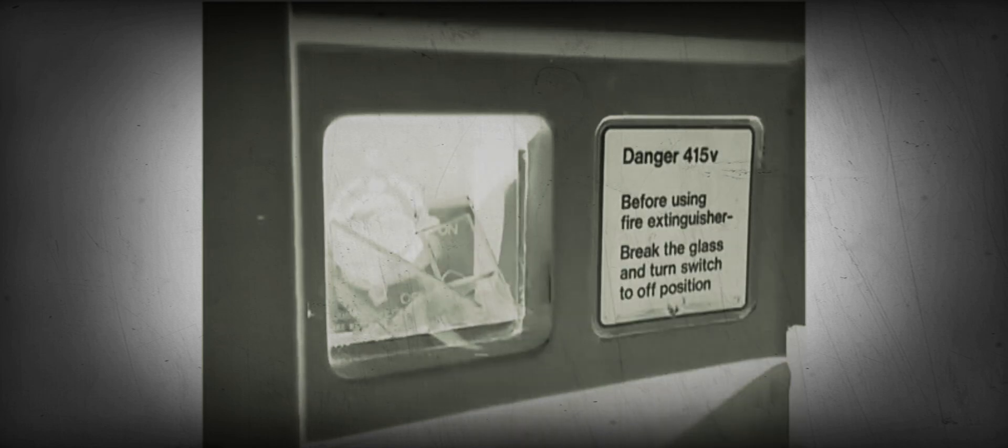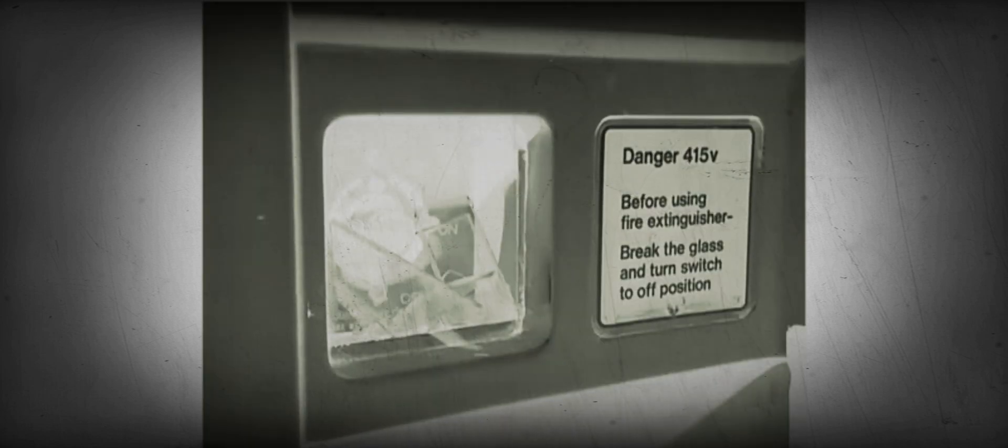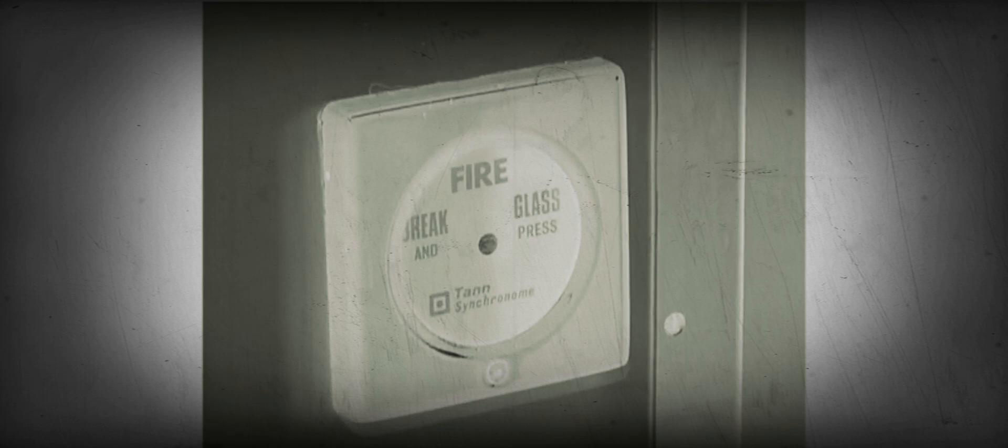Foam type fire extinguishers are located throughout the train. You must isolate by breaking the glass and turning the switch, or manually activate the alarm by breaking the glass of the alarm panel.